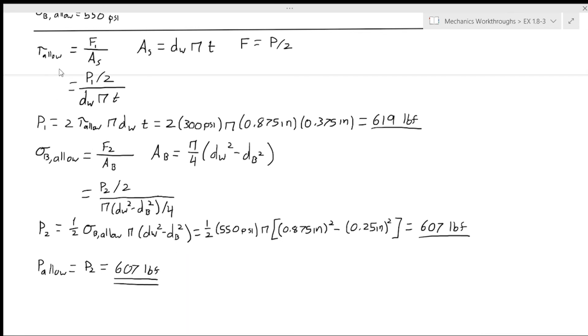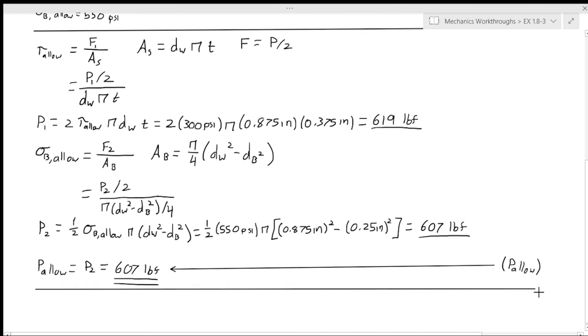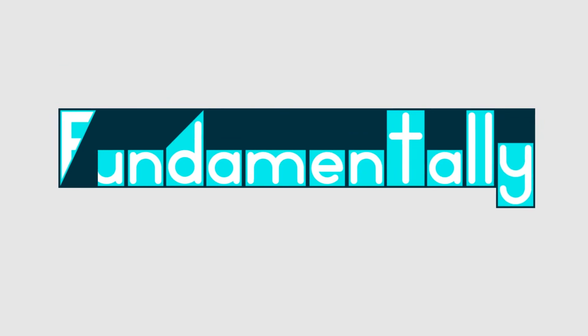And following our homework format, we draw an arrow from the margin and put our variable in parentheses. And we end the problem with double underline across the page. And we are done.